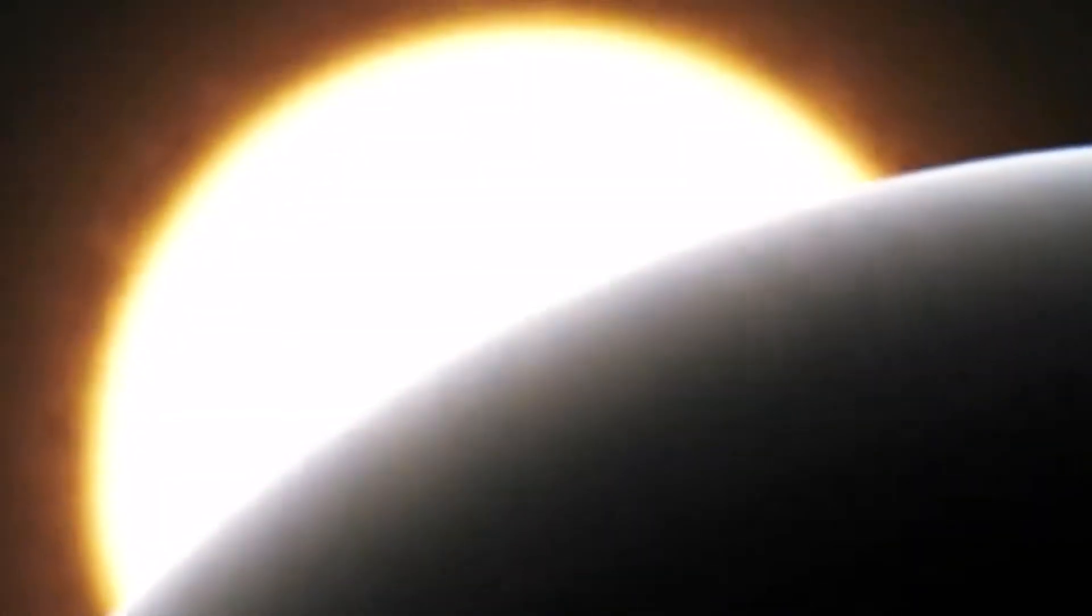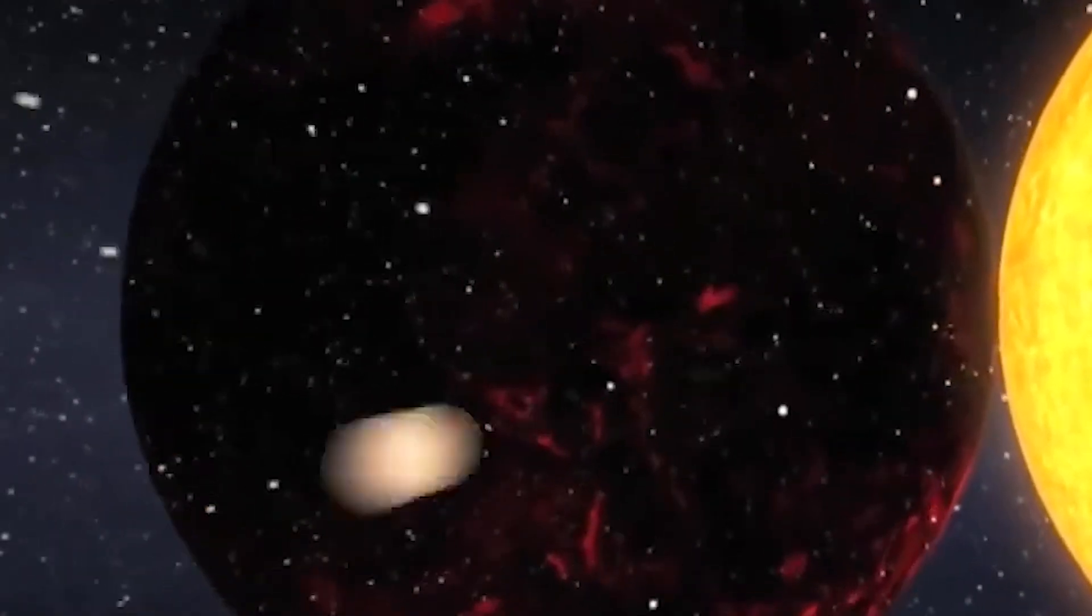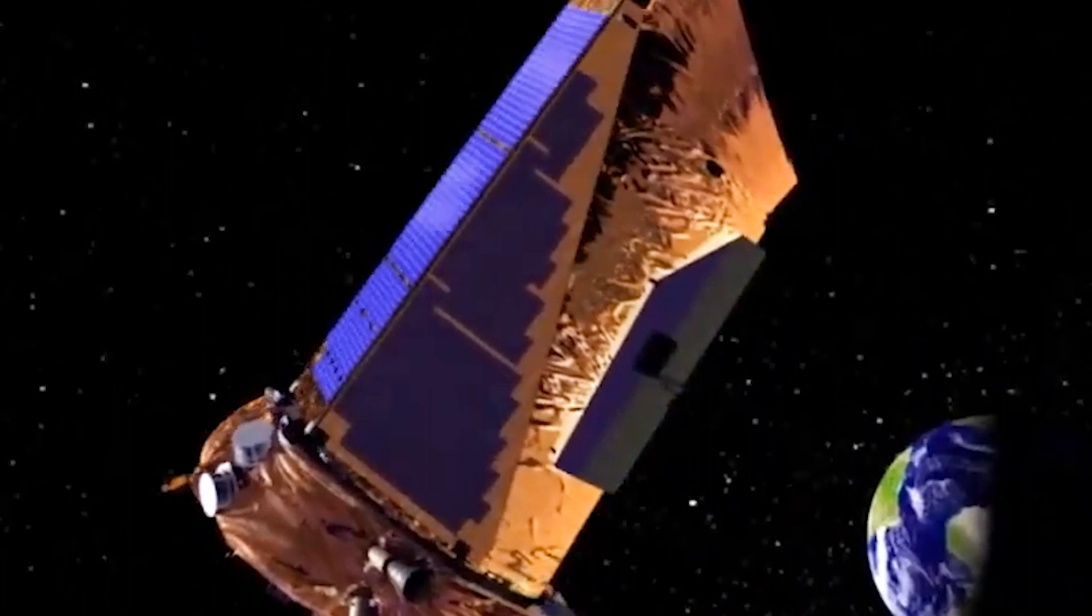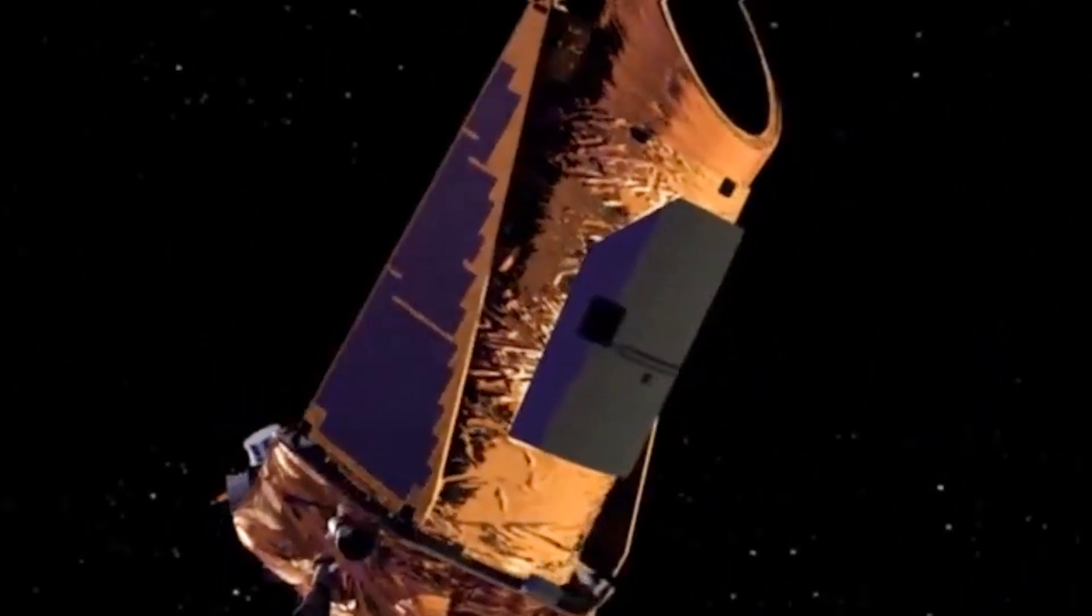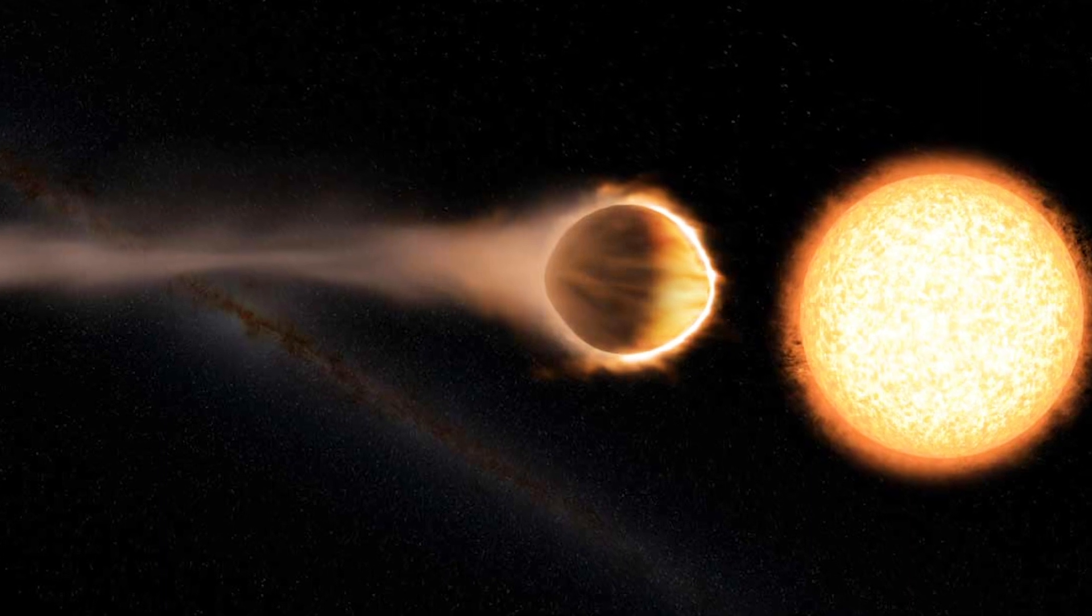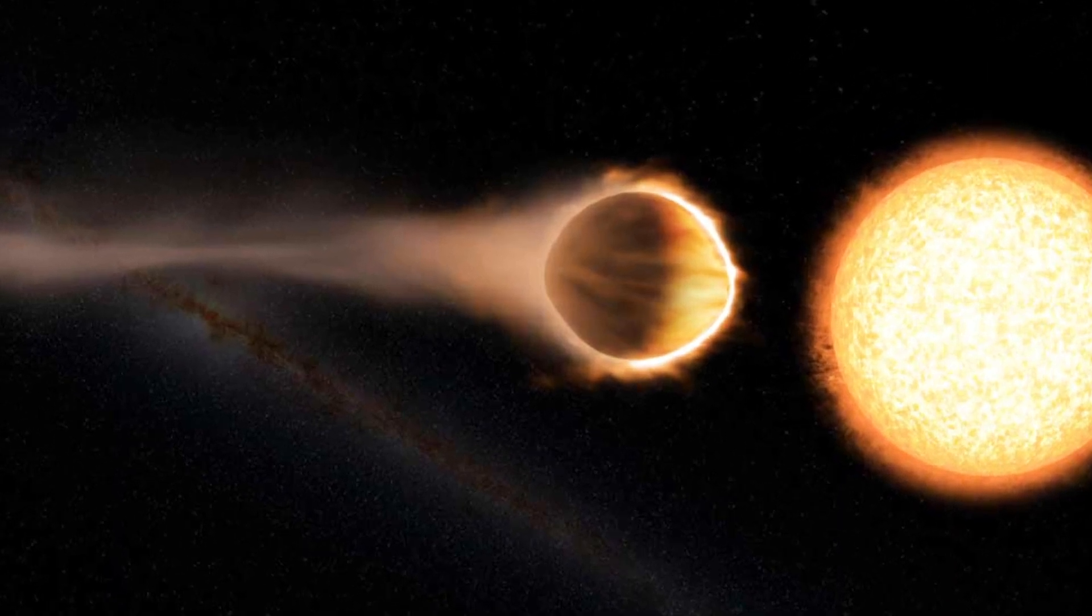Over the last decade, Kepler 1658 b's orbital period around its sun has reduced by about 131 milliseconds or thousandths of seconds per year from its originally discovered 3.8 days orbital period.